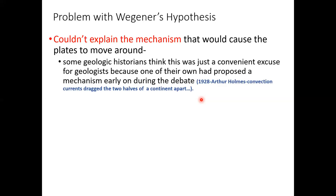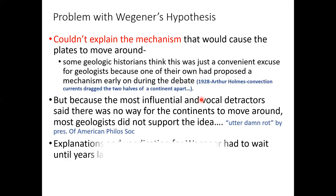Science advances through research, and most research is done by grad students and their advisors. The old guard at Harvard, Yale, Stanford, and Berkeley refused to advise students who wanted to work on continental drift. A grad student without an advisor either had to drop out or work on research their advisor approved. So the science of continental drift came to a standstill.